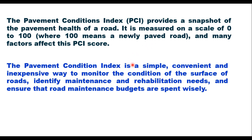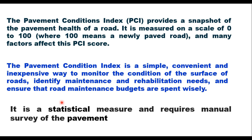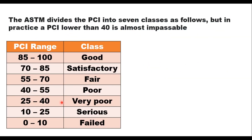The pavement condition index is a simple, convenient, and inexpensive way to monitor the condition of the surface of roads, identify maintenance and rehabilitation needs, and ensure that road maintenance budgets are spent wisely. It is a statistical measure and requires manual survey of the pavement. ASTM divides the PCI into seven classes.